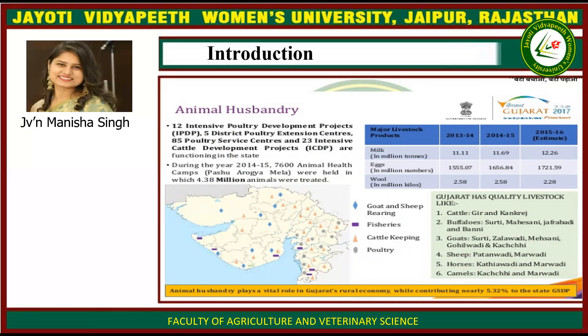In animal husbandry, 12 intensive poultry development projects, 5 district poultry extension centres, 85 poultry services centres and 23 intensive cattle development projects are functioning in the state. During 2014–15, 7,600 animal health camps (Pashu Arogya Mela) were held, in which 4.38 million animals were treated. Gujarat has quality livestock including cattle breeds Gir and Kankrej; buffalo breeds Surti, Mehsani, Jaffarabadi and Banni; goat breeds Surti, Zalawadi, Mehsani, Gohilwadi and Kachchi; sheep breeds Patanwadi and Marwadi; horse breeds Kathiawadi and Marwadi; and camel breeds Kachchi and Marwadi. Animal husbandry contributes nearly 5.32% of Gujarat's state GSDP.